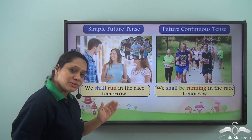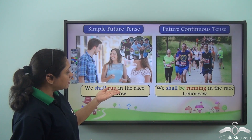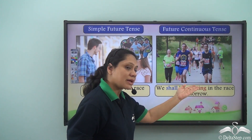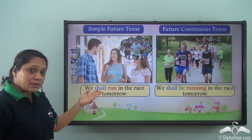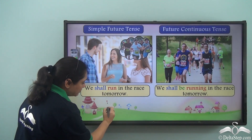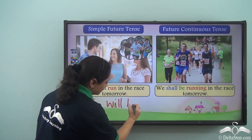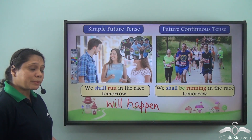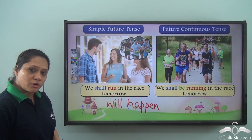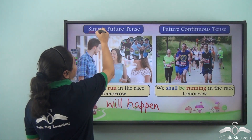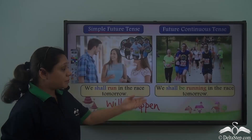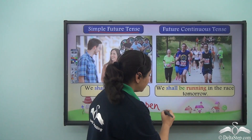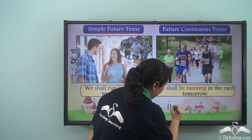Let us read these two sentences: 'We shall run in the race tomorrow' and 'We shall be running in the race tomorrow.' The first sentence simply tells us that something will happen tomorrow — we shall run in the race tomorrow. This sentence is in the simple future tense.